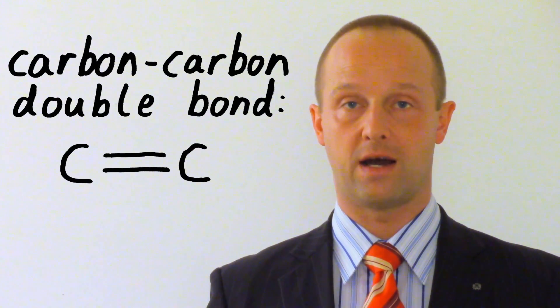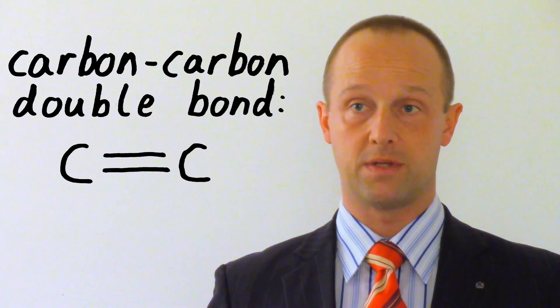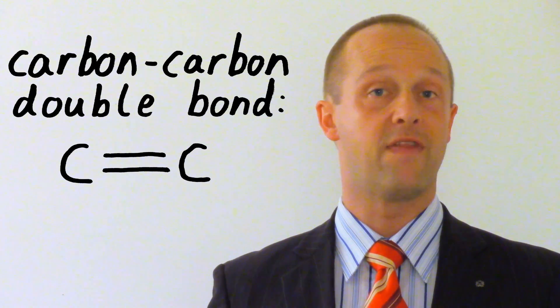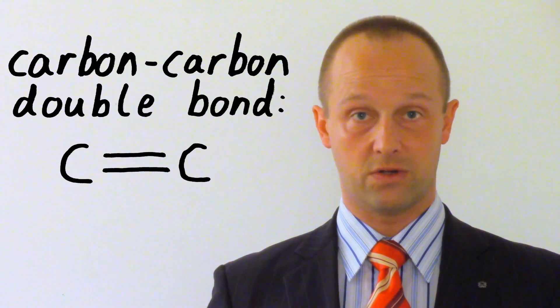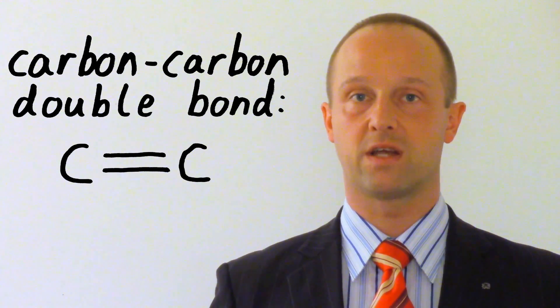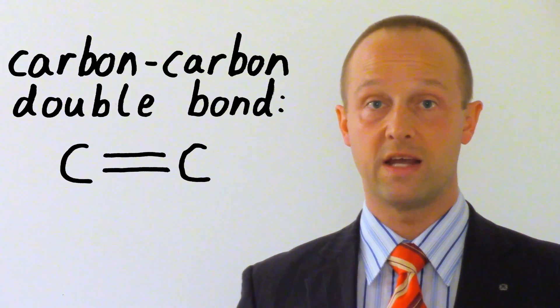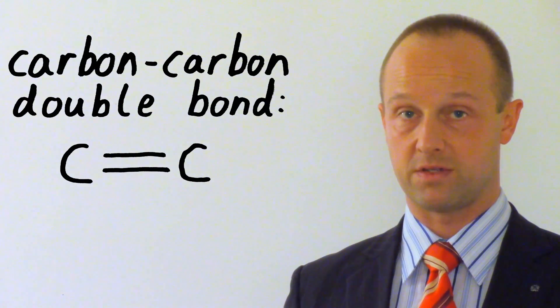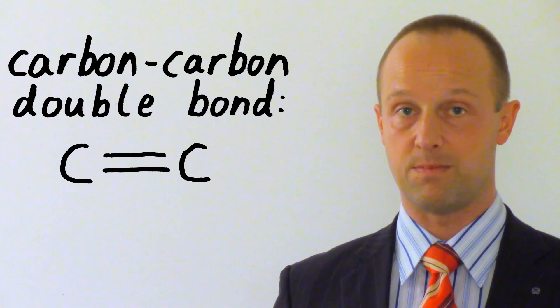Now let's focus on the difference between alkanes and alkenes. There is only really one key difference. Alkenes have a carbon-carbon double bond. That is two covalent bonds going between a pair of atoms, rather than just the usual one.